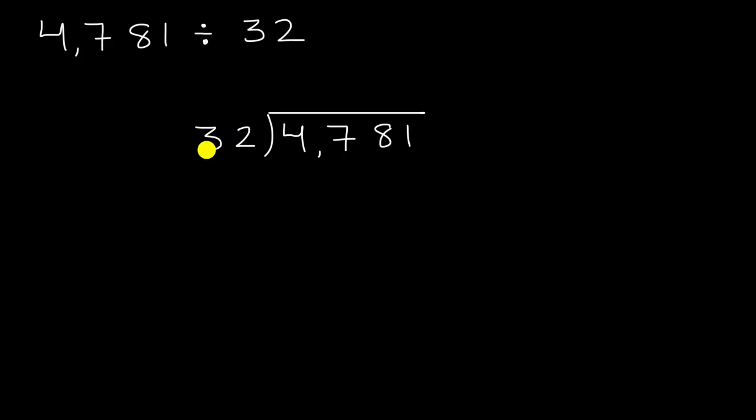So we'll start by saying, how many times does 32 go into four? Well, 32 doesn't go into four at all. So then we'll move on. How many times does 32 go into 47? Well, it's pretty clear that 32 goes one time into 47. So I'll put the one right over there above the seven in 47.